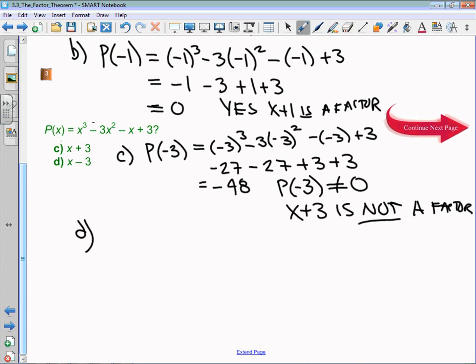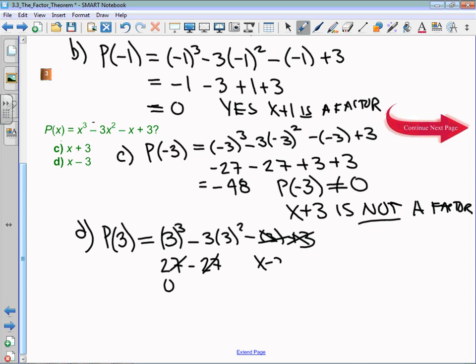For part d, to check if x minus 3 is a factor, I would check the polynomial at 3. That's 3 cubed minus 3 times 3 squared minus 3 plus 3. Right away we know these cancel. 3 cubed is 27, but then I'm subtracting 27. Those cancel and I get 0. So x minus 3 is a factor.